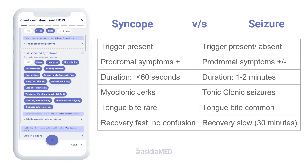A seizure episode, on the other hand, usually does not have a trigger. If present, it is due to sleep deprivation or alcohol withdrawal. Prodromal symptoms may or may not be present. A typical episode lasts about 1–2 minutes. Convulsions are mostly in the form of tonic-clonic contractions; tongue bite is common, and recovery takes longer, up to 30 minutes.